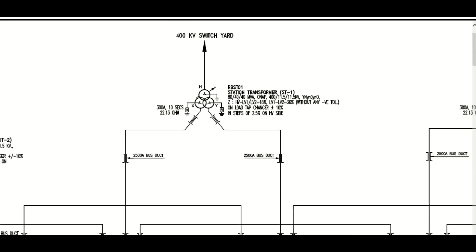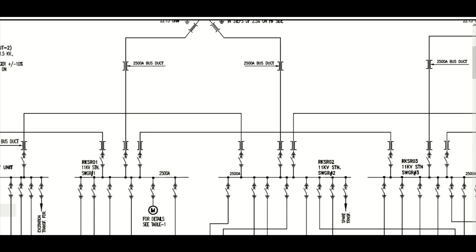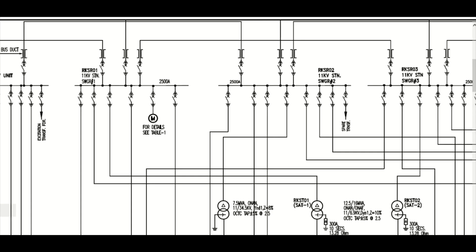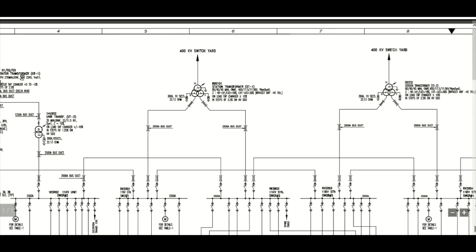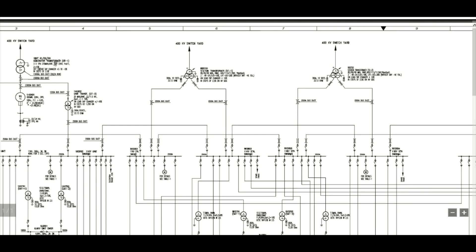The purpose of this transformer: since this is a non-GCB scheme, meaning there is no generator circuit breaker, during plant startup we need power supply to start the plant. It will back-charge power from the 400 kV switchgear, taking from the grid power grid. The 400 kV supply is then stepped down to 11 kV to run all the required auxiliary loads — such as motor-driven boiler feed pumps — to start the plant. There are two station transformers in this project.